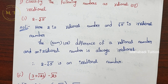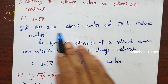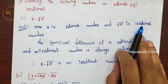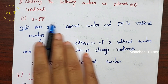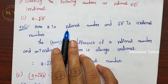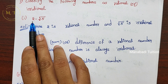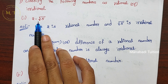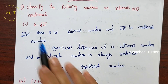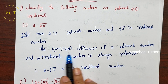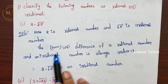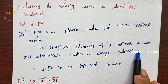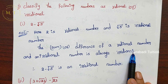Here 2 is the Rational number and root 5 is the Irrational number. So we have 1 Rational number and 1 Irrational number. The difference or sum — that is, addition or subtraction of a Rational and an Irrational number — is always an Irrational number.